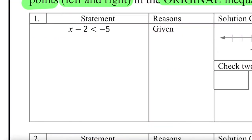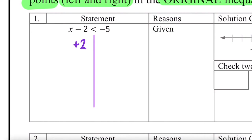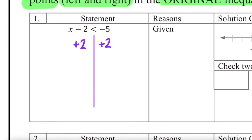X minus 2 is less than negative 5. We're going to start off by solving this the same way we would solve an equation, so I put a line down the middle separating the left from the right. How would I solve this if it were an equation? I would start by adding 2 to both sides, because just like an equation, my goal is to isolate x — meaning I need to make a zero term out of that minus 2. That does create a zero term, and I'm left with x is less than negative 3.